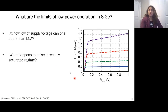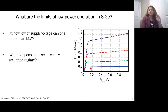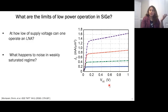Looking at current density in mA/µm² as a function of supply voltage (collector-to-emitter voltage), for the current densities we care about, these transistors perform very ideally for supply voltages as low as even less than 100 mV. So DC-wise, these transistors are performing ideally. Now we need to understand what happens to the RF performance and noise at very low supply voltages.